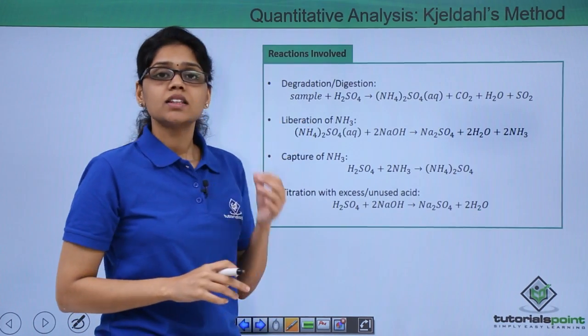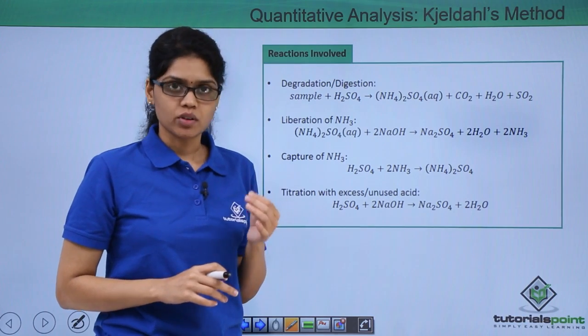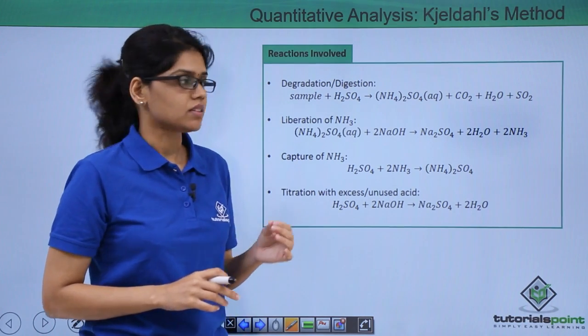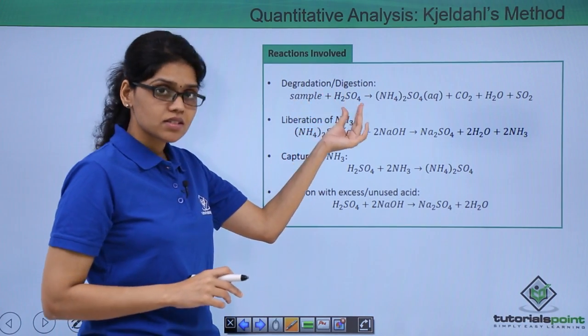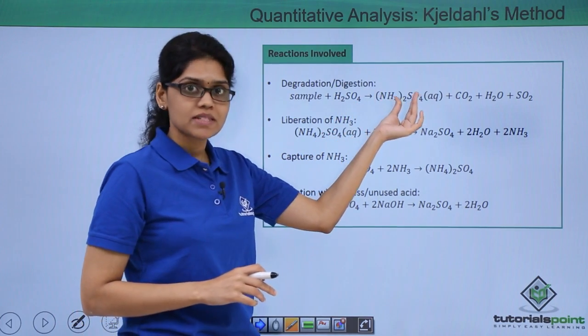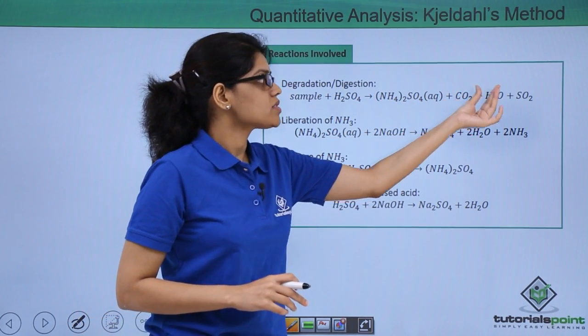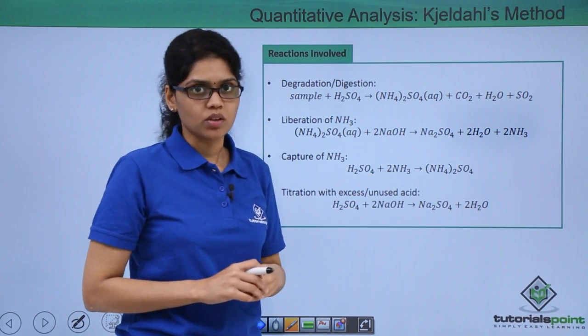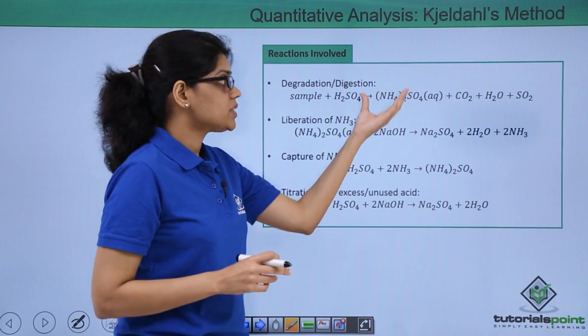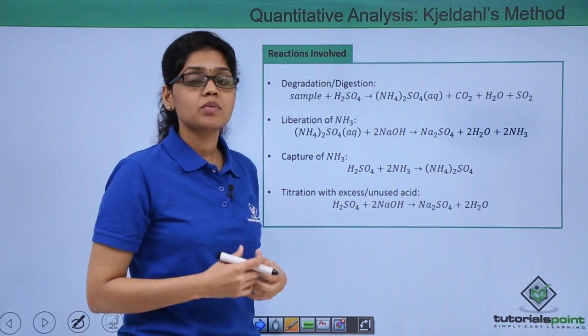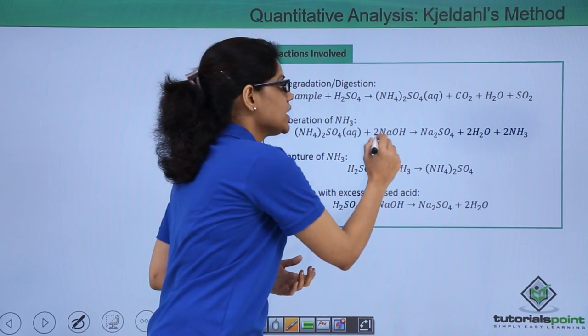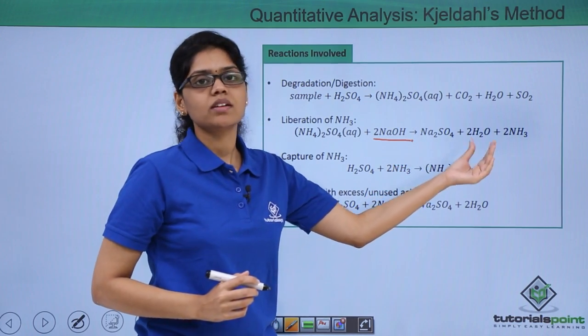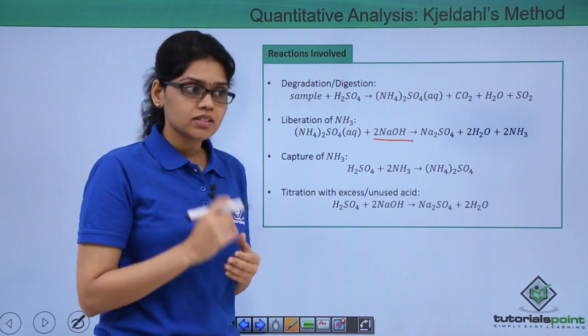As you can see, the first step is degradation or digestion of our organic compound. Here the sample is digested with H2SO4 giving ammonium sulphate, and carbon dioxide, water, and sulphur dioxide are evolved. In the second step, this ammonium sulphate is treated with excess of NaOH giving us Na2SO4, water and ammonia.